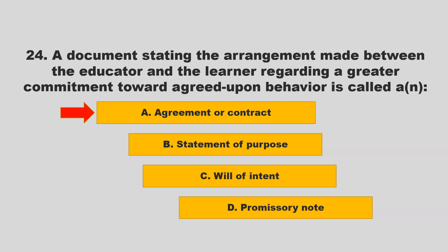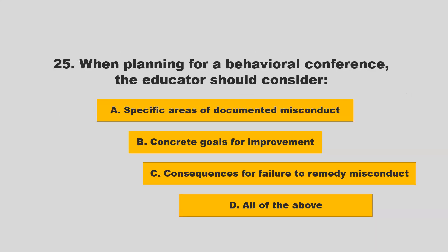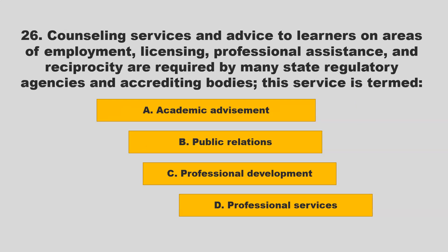When planning for a behavioral conference, the educator should consider specific areas of documented misconduct, concrete goals for improvement, consequences for failure to remedy misconduct — all of the above. If you chose D, all of the above, you are correct.